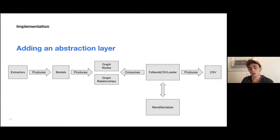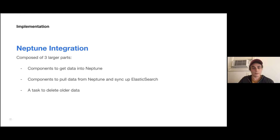This is great for the long-term of the data builder project because it allows supporting multiple versions of the database if a newer version is not compatible with past versions — and it allows us to support Neptune. I can see RDS being developed upon as well, so it allows the Amazon community to support different backends. After that was done, I started working on the actual Neptune integration, which breaks into three larger parts: components to get data into Neptune, components to pull from Neptune to sync up the Elasticsearch engine, and finally a task to delete older data.